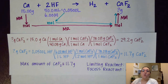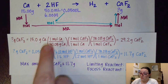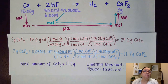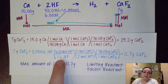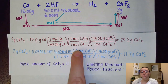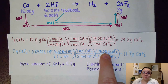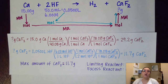I then did the same thing with the hydrofluoric acid. I started with my volume of 0.05 liters, then used the molarity — 6 molar tells me there are 6 moles per liter of solution. Then I did a mole-to-mole ratio: a two-to-one ratio because the coefficients are 2 and 1. Then I converted moles back to grams using the molar mass of calcium fluoride. That got me a value of 11.7 grams of calcium fluoride possible from the hydrofluoric acid.